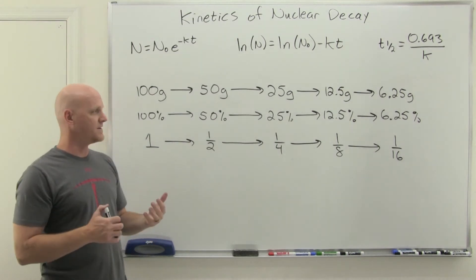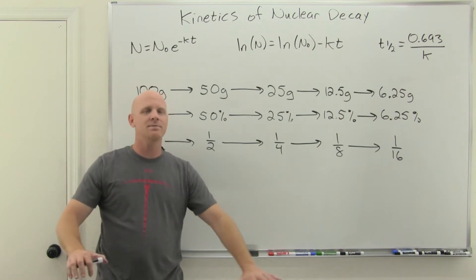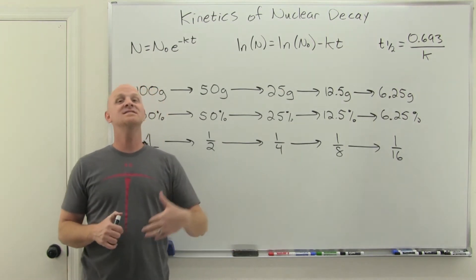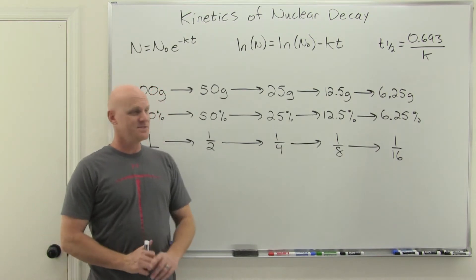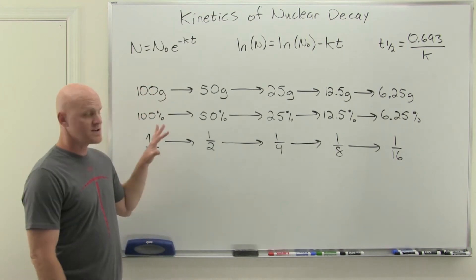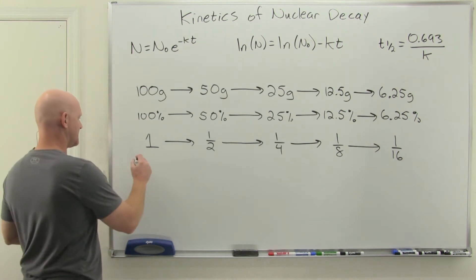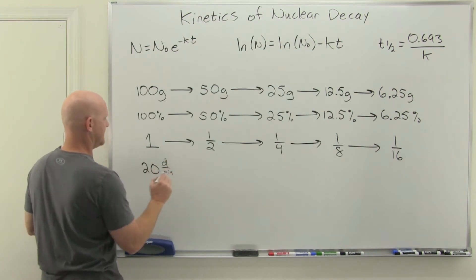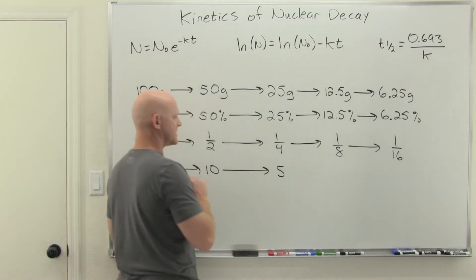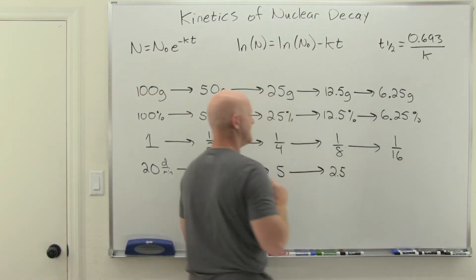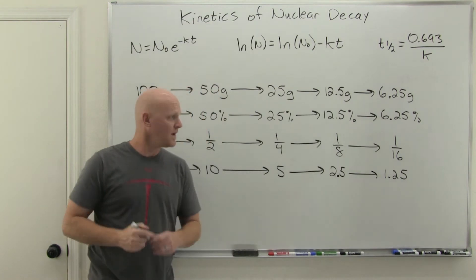There are different units we use for radioactivity — the Becquerel, the Curie, the Rad, the Rem, the Gray — I'm not going to get into all of these. The only unit I'm actually going to use in this lesson is disintegrations per minute, and we'll call that the activity. For example, if the initial activity was 20 disintegrations per minute, then after a half-life that would be down to 10, then 5, then 2.5, then 1.25 disintegrations per minute.